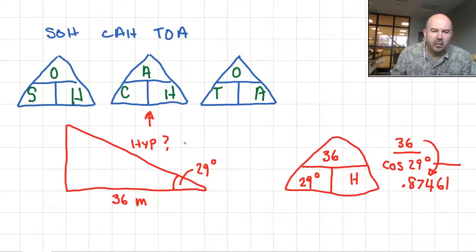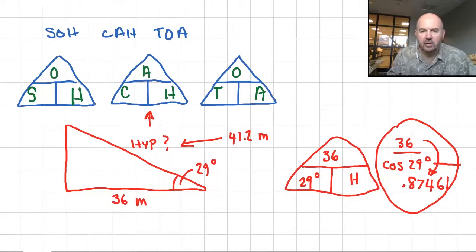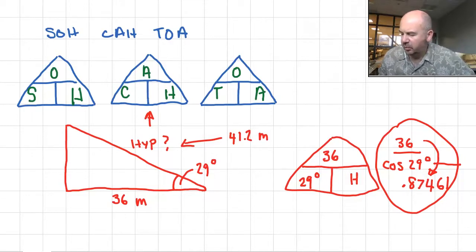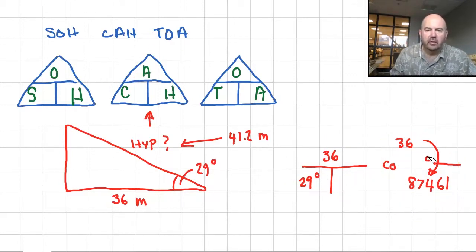So the hypotenuse is 41.2 meters, which makes sense. I could do this all at once in the calculator: 36 divided by cosine(29), put a bracket in, and equals — and you get the number immediately.